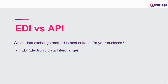EDI, or electronic data interchange, is an electronic version of business documents — for example, purchase orders, purchase order acknowledgments, and invoices. EDI has been around for decades and is used in all industries for B2B communications.